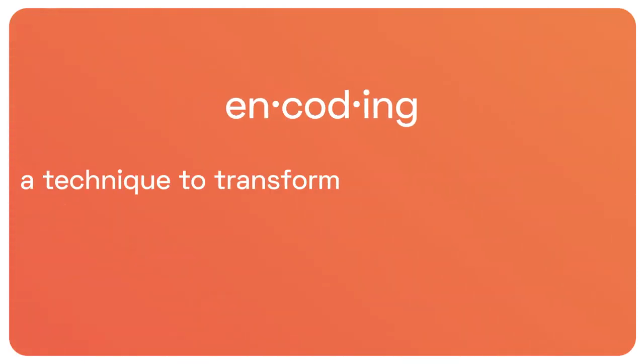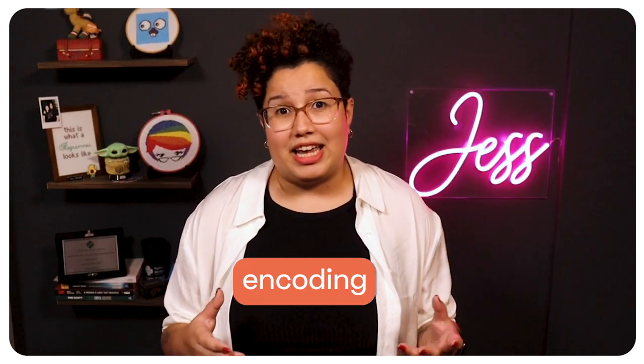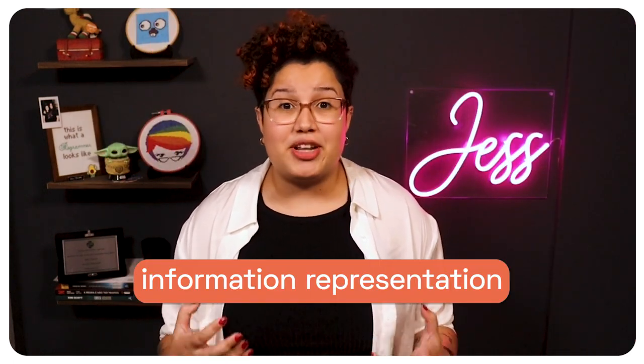Let's begin with encoding. You can define encoding as a technique to transform data from one format to another so that it can be understood and consumed by different systems. Basically, encoding has to do with information representation. When you have some information — say the name of the mineral of Superman's weakness — you can represent it through letters, as in kryptonite. This is a handy representation for humans, but not so easy for being manipulated by computers. What usually happens is the transformation of these sequences of characters into sequences of bits.